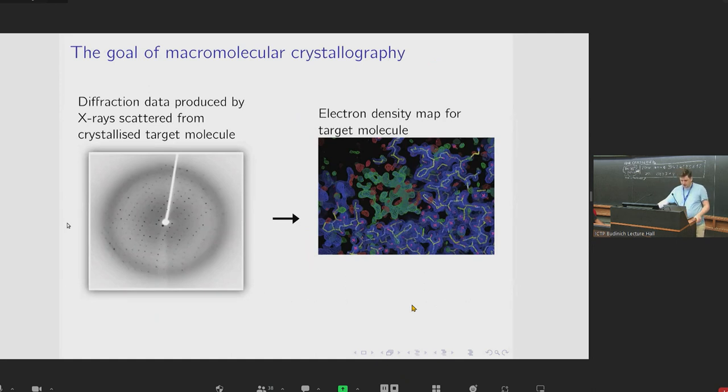So to be specific, the goal of macromolecular crystallography is this. We want to perform that X-ray diffraction experiment and collect the diffraction pattern. And from the information contained in that diffraction pattern, we want to construct a map of the electron density for the target molecule, which tells us what its structure is.